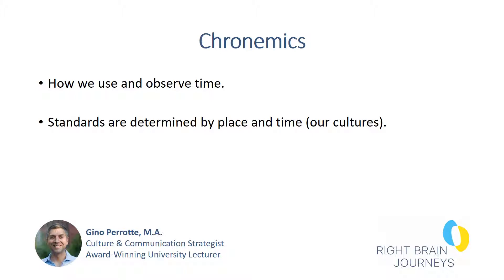So where you are — what country, what area of that country, what city, maybe it's the rural countryside — all of that is going to influence the vision of time. When we say standards are determined by place and time, I'm not referring to chronemics itself, but as I explained in the previous physical appearance video, it means more the time period, because how we saw time in the 1700s, 1800s, 1900s, and now the 2000s will all shift because of our lifestyles located in that particular era.